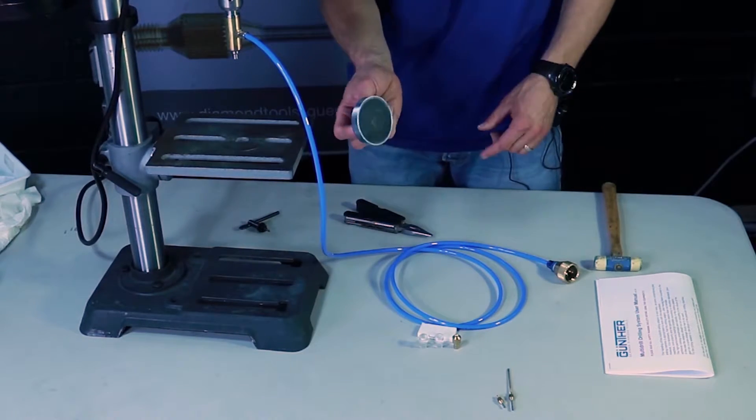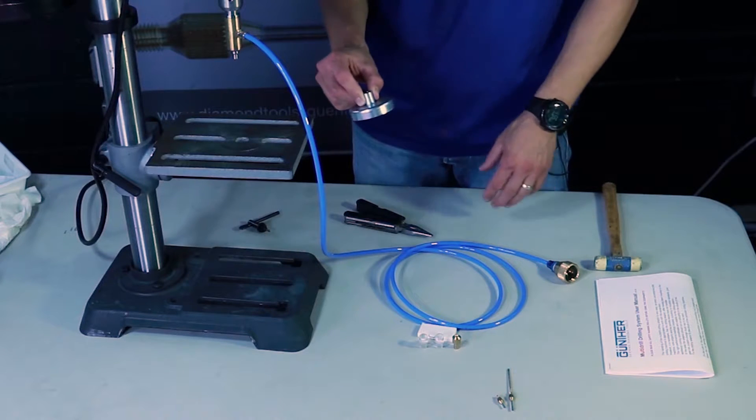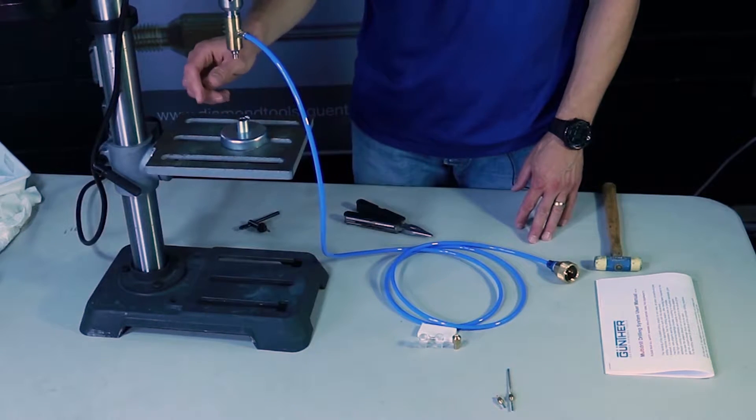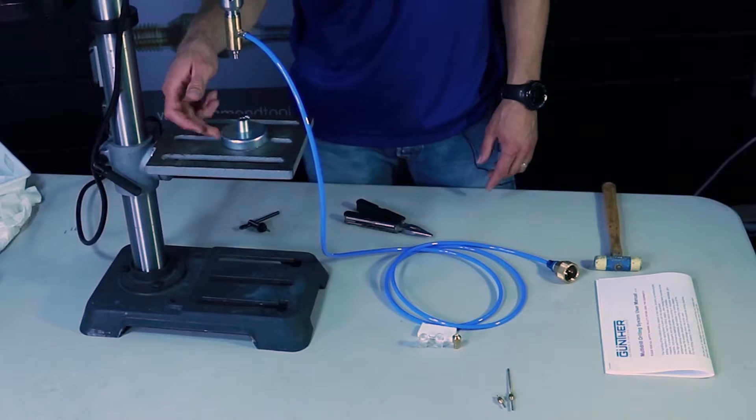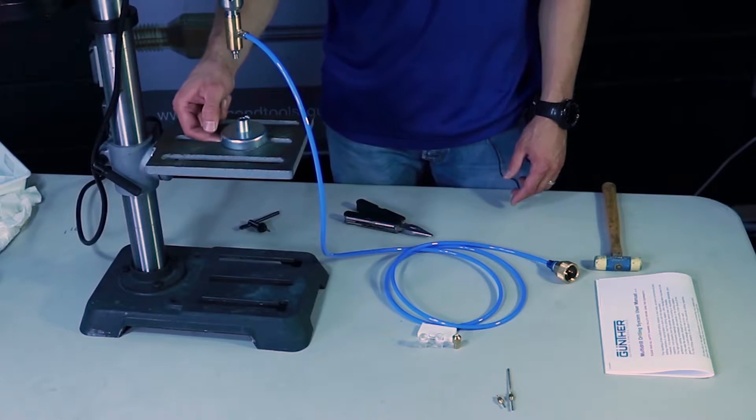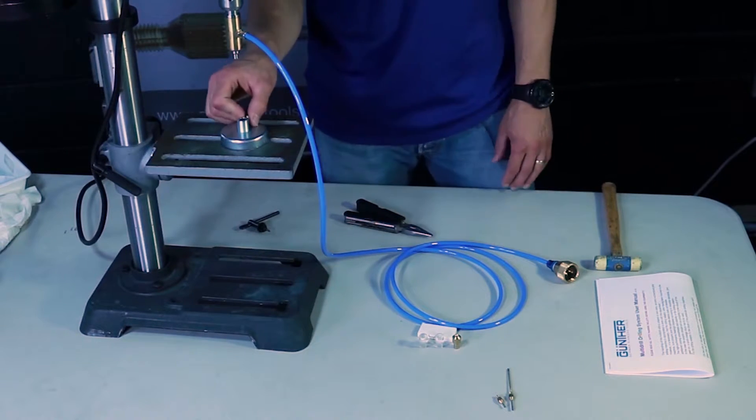Next take the magnetic foot or the magnetic base and put it on the foot of the drill press. Watch out because it's a pretty strong magnet and it really hurts to get your skin pinched in there. So just be aware.